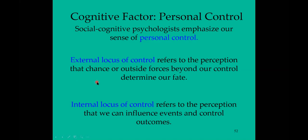People with an external locus of control were also more likely to procrastinate difficult tasks. A student with a strong external locus of control might wait until 20 minutes before a major paper is due to start on it, reasoning that it doesn't make any difference what they do — the professor will give whatever grade regardless of effort. People with an internal locus of control, on the other hand, were more likely to persist at difficult tasks and not give up easily, believing they can control the outcome through effort.